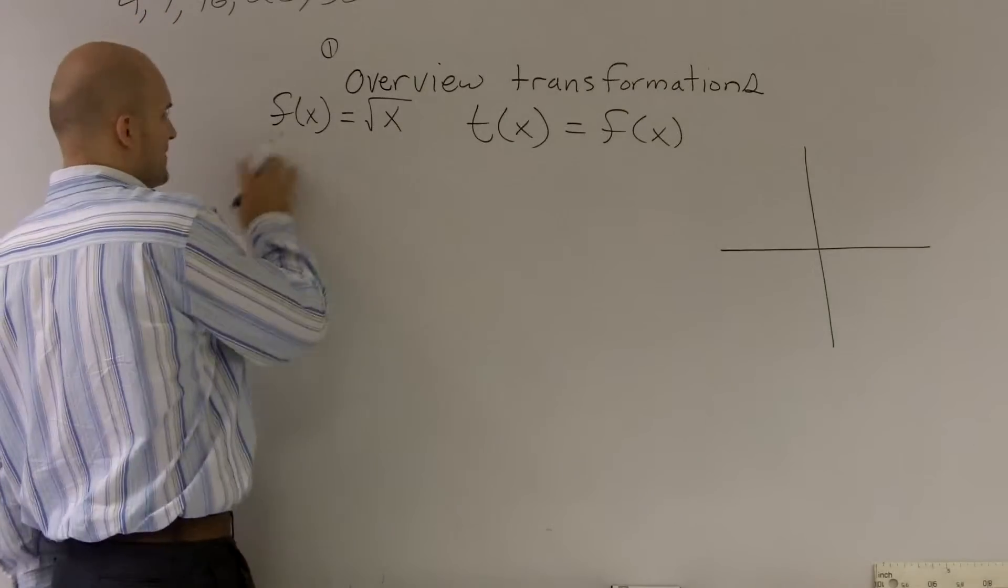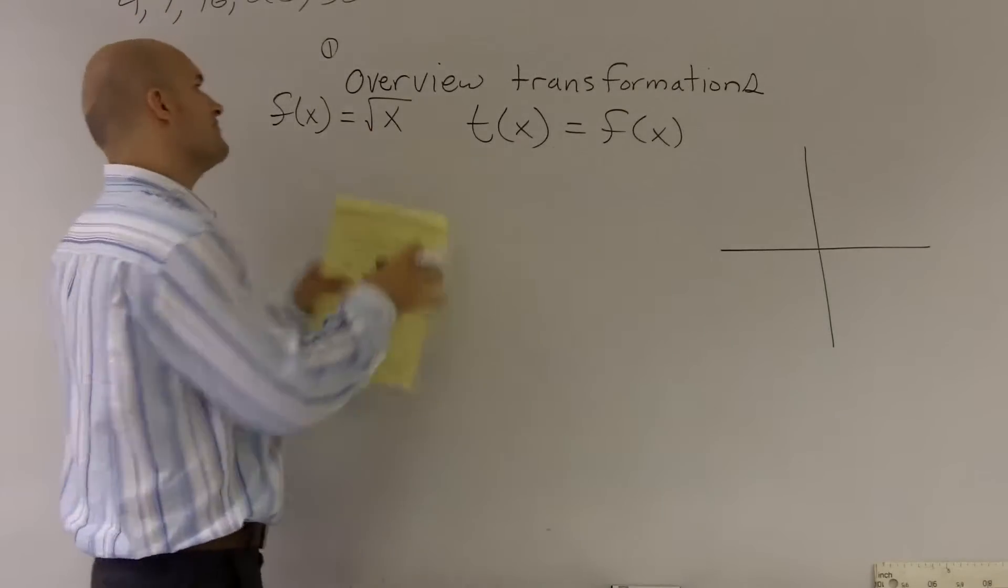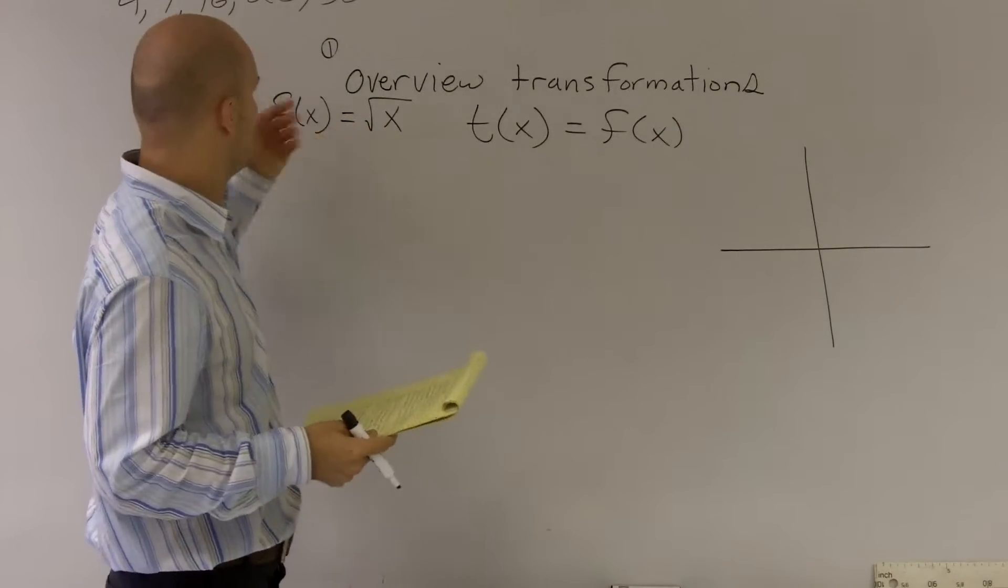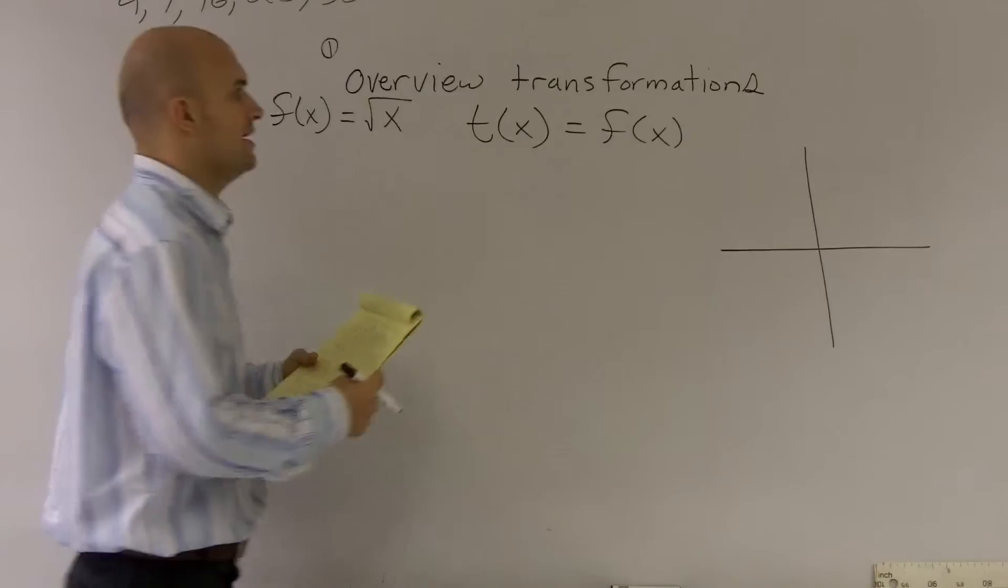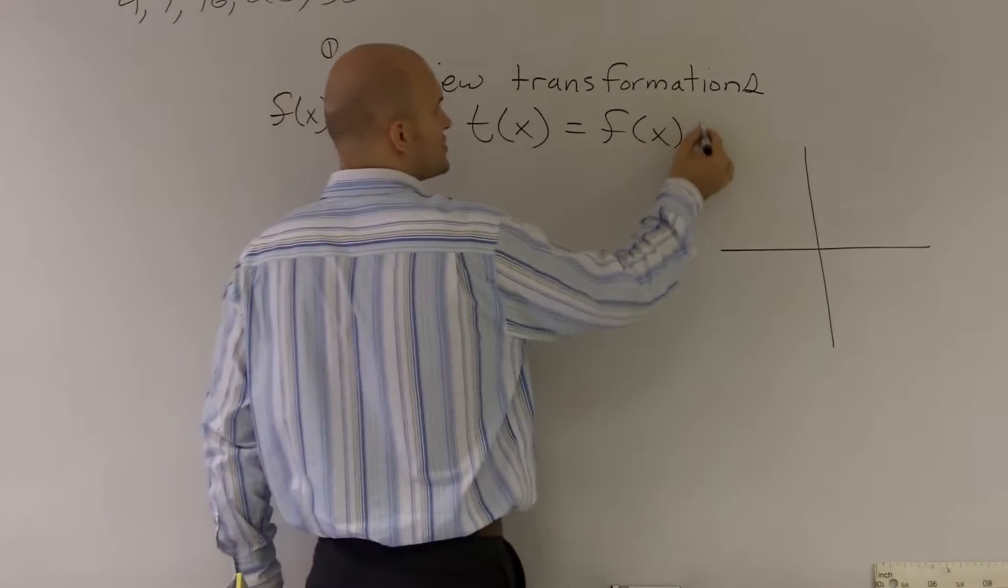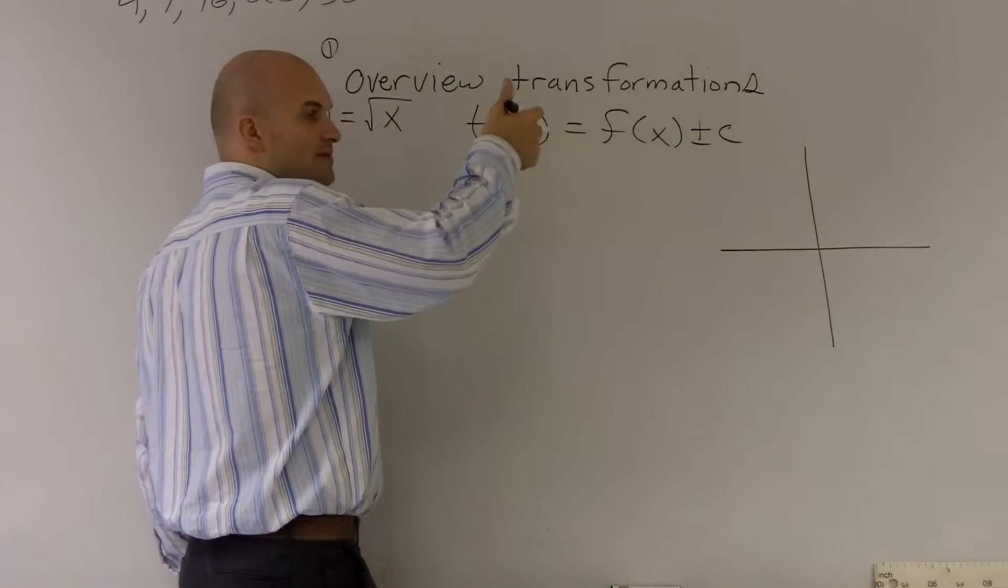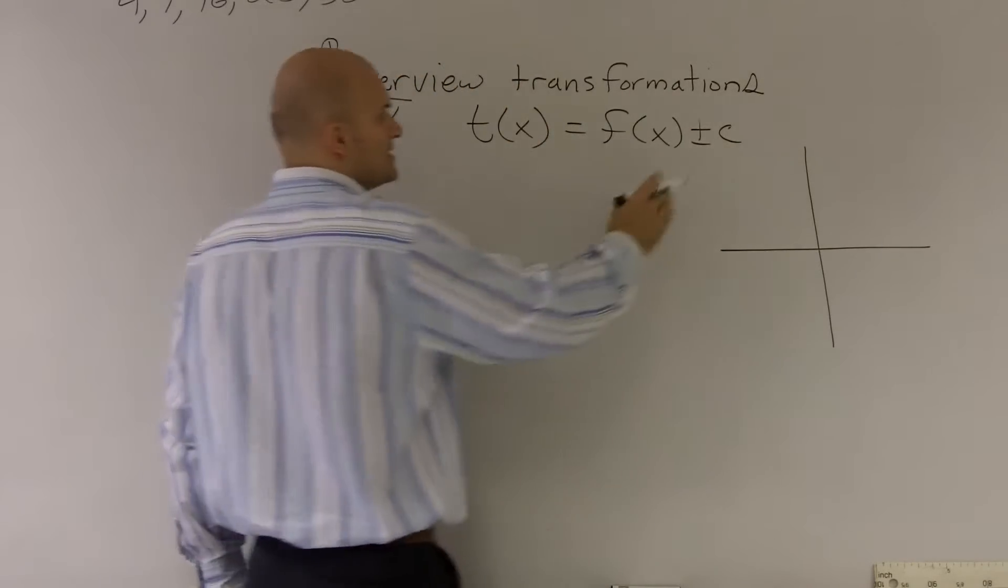So in my previous two videos, I showed you guys how to find the vertical and horizontal shifts of a graph given our function square root of x. And what we did to find a vertical stretch was we did plus or minus c, plus being up c units, negative being down c units.